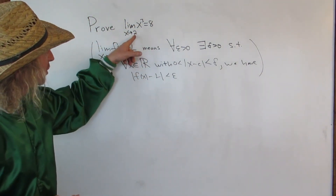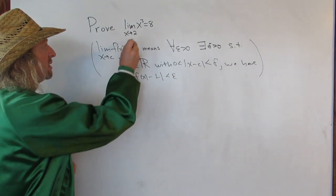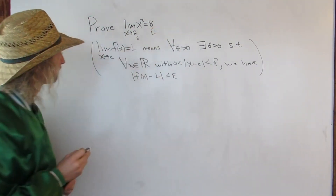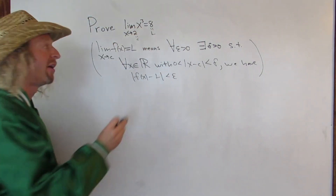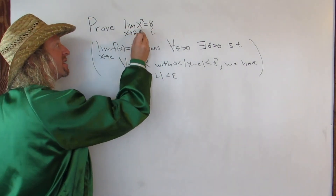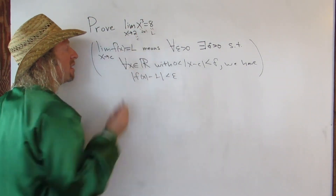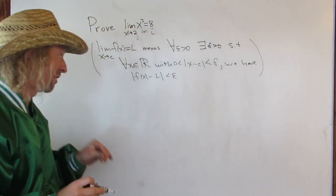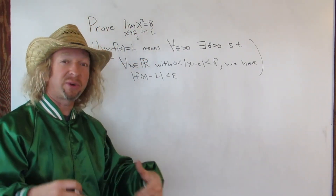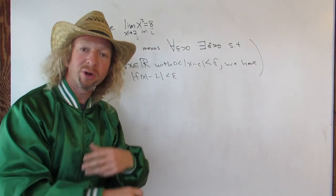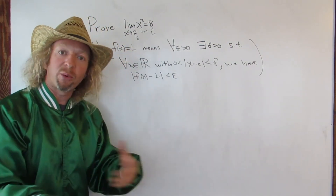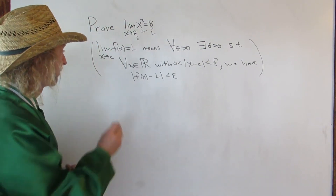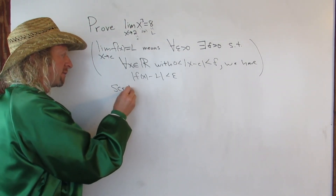In this particular problem, our c is going to be 2, our L is 8, and our f of x is x cubed. So before we do the proof — that's the easy part. The proof is the easy part; the hard part is figuring out the proof. Once we figure out our proof, writing it is just a mere formality. So let's figure out the proof. This is the scratch work — this is the hardest part.